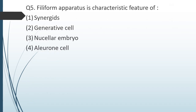Question number five: filiform apparatus is a characteristic feature of synergids, generative cell, nucellular cells, or aleuron cells? The correct answer is option one, synergids.